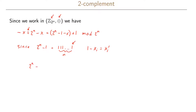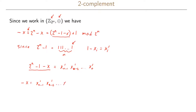So 2^{n-1} minus x gives us x_{n-1} prime, x_{n-2} prime, down to x_0 prime. Therefore, negative x can be written as x_{n-1} prime, x_{n-2} prime, down to x_0 prime, and then we add 1 at the end. So to compute the negative of a number x, we take the binary representation, complement each bit, and then add 1 to get the negative two's complement representation.